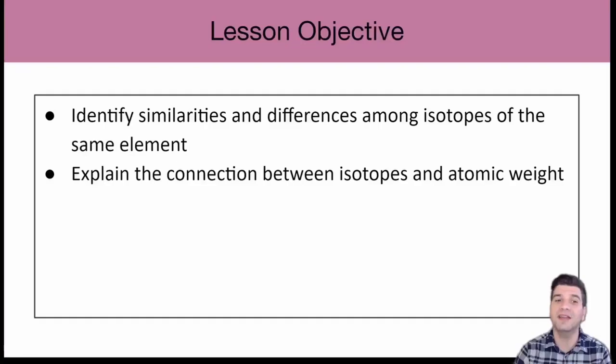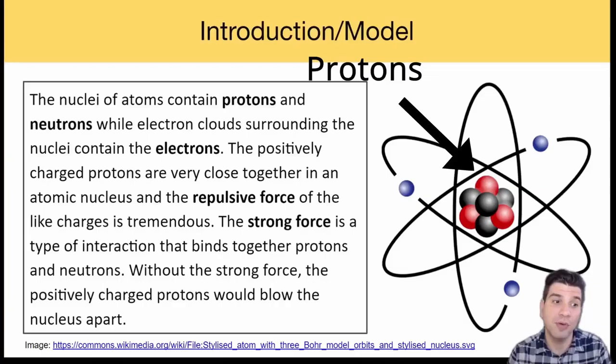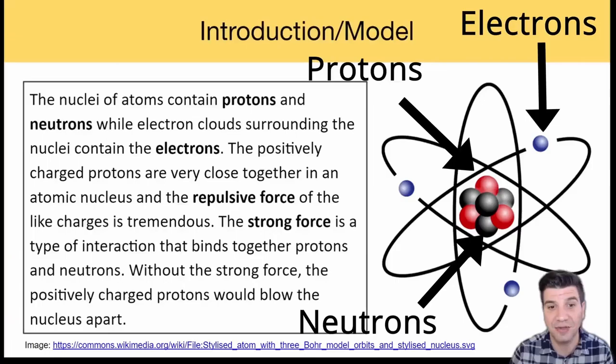Hi everyone, this is Mr. Campania. I have a question for you. What happens when you change the number of neutrons in an atom? Today's lesson objective: we will identify similarities and differences among isotopes of the same element and we will explain the connection between isotopes and atomic weight.